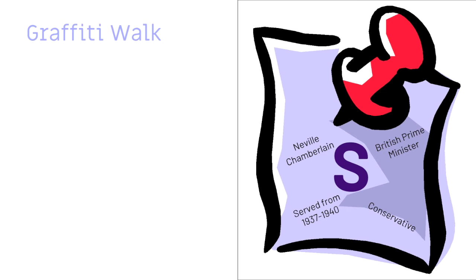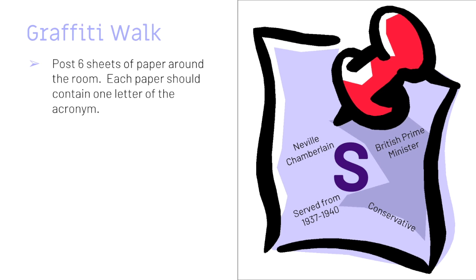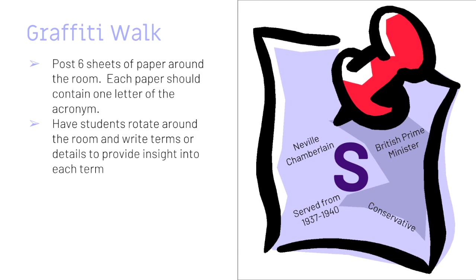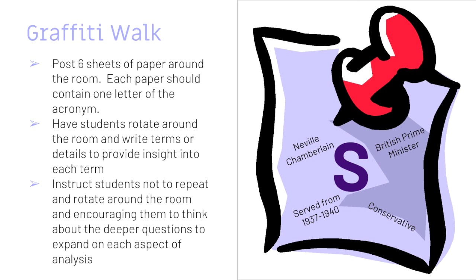In a graffiti walk, you would post the letters of the acronym around the room. Assign each student a starting letter and specify no repeating answers. Have students rotate around the room adding information that would provide more insight into each aspect of the analysis. For example, the speaker poster might read: Neville Chamberlain, Prime Minister, Great Britain, Leading into World War II, Politician. After students have rotated, hold a discussion that elicits student responses as to how each part of the acronym helps us better understand the author's point of view and credibility. You may even extend the activity by having students look at a second source on the same topic and discuss which is more credible and why.